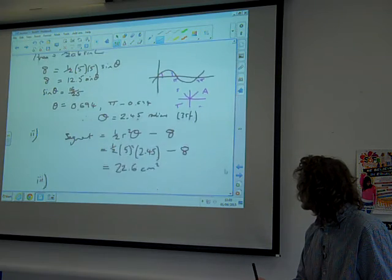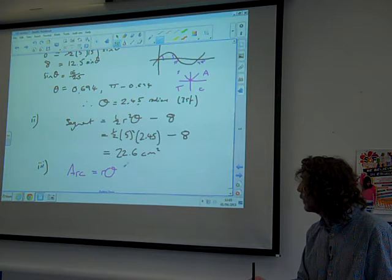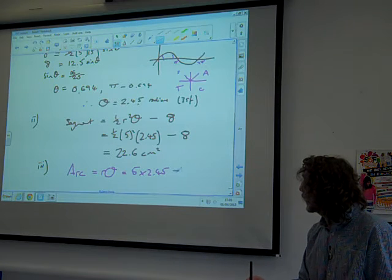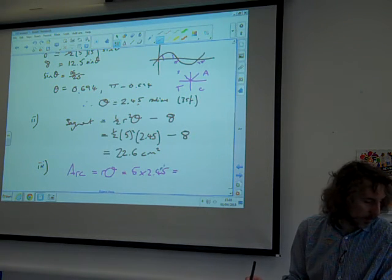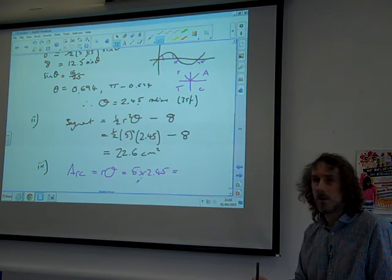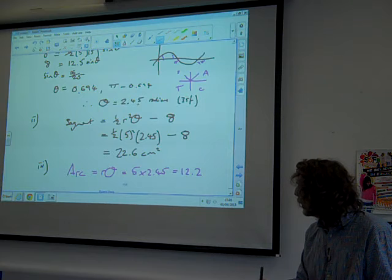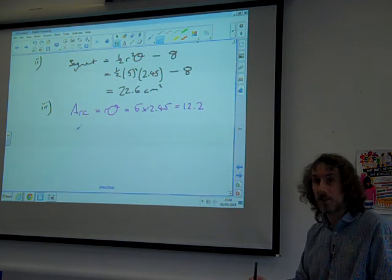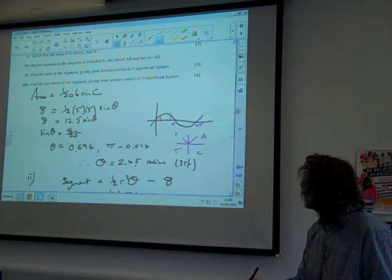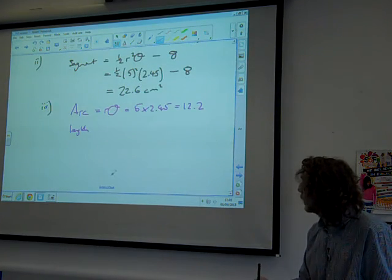The perimeter is made up of the arc, and the arc is r theta, which is 5 times 2.45. Again, we're going to use our full, unrounded version for doing that, which is 12.2. And we've also got the length, the third length of the triangle, length AB.